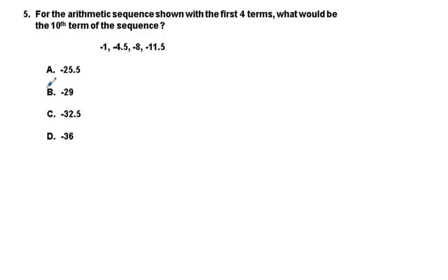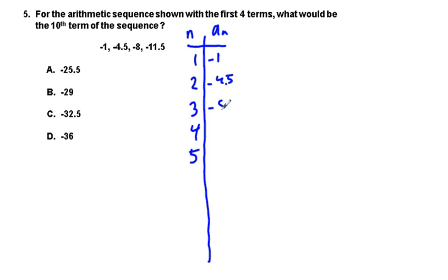5, for the arithmetic sequence shown with the first four terms, what would be the 10th term? You can set this up. You have N, A sub N. So 1, 2, 3, 4, 5. Negative 1, negative 4.5, negative 8, negative 11.5. When you know for the 10th term, you're going to have an even numbered sequence. You notice your whole numbers will be odd, and 10 will be even numbers. So you've got to have one of these 0.5 things. Just based on that alone, B and C will be eliminated.